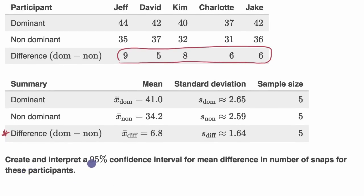And then we are asked, create and interpret a 95% confidence interval for mean difference in number of snaps for these participants. So pause this video. See if you can make some headway here. See if you can think about how to approach this. So what's interesting here is, we're not trying to construct a confidence interval for just the mean number of snaps for the dominant hand, or the mean number of snaps for the non-dominant hand. We're constructing a 95% confidence interval for a mean difference.